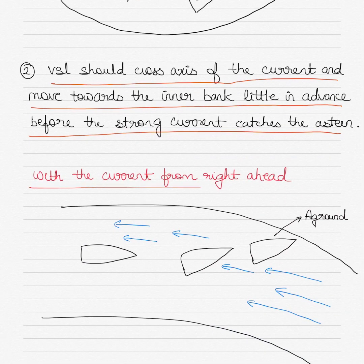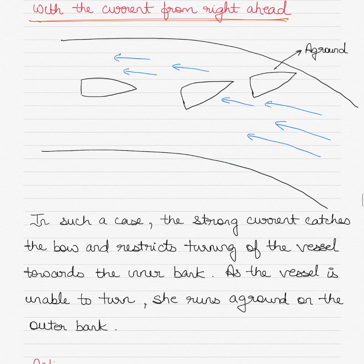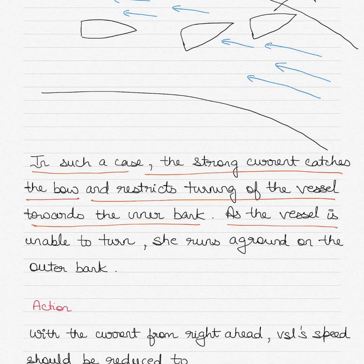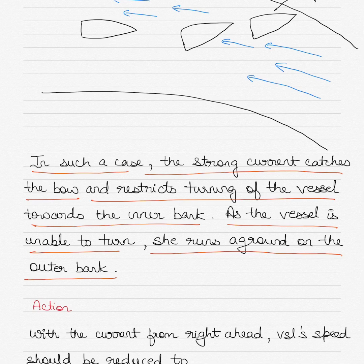With the current from right ahead, the strong current catches the bow of the vessel and restricts the turning of the vessel towards the inner bank. As the vessel is unable to turn, she may run aground on the outer bank.